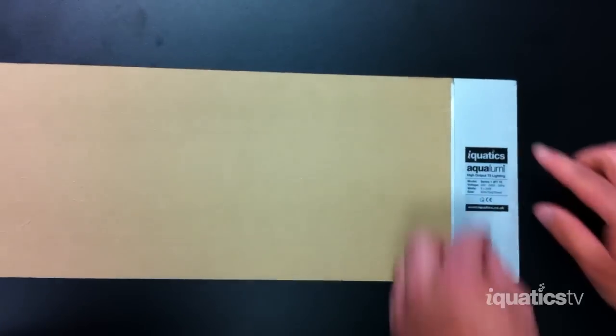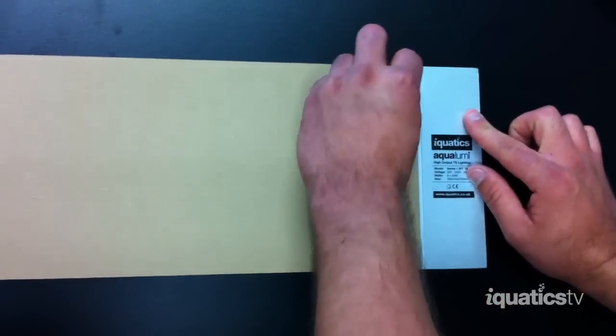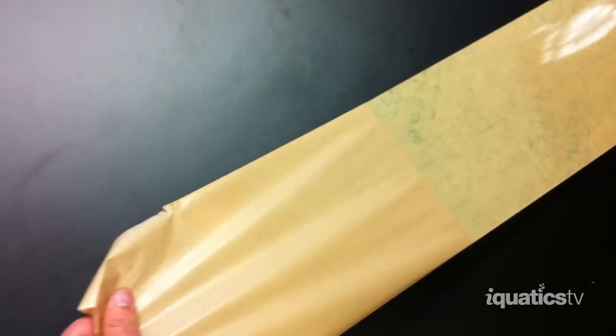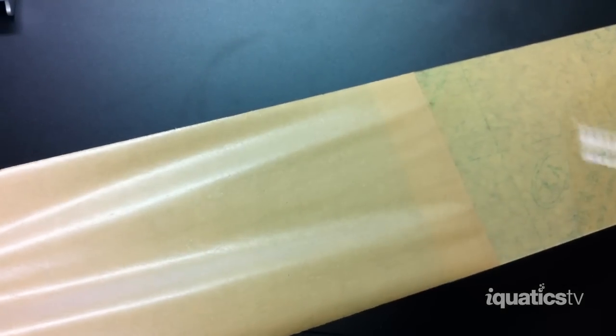Peel back the protective sheet which is on the clear cover. If you do this in an even parallel motion, it will come off quite easily. This process is to be done on both sides of the sheet.